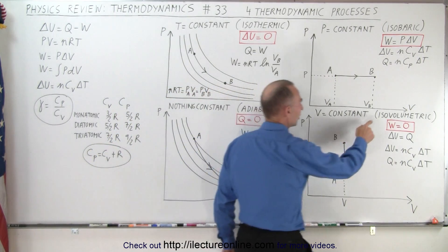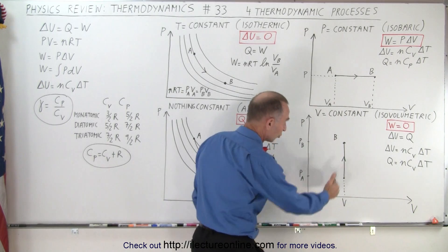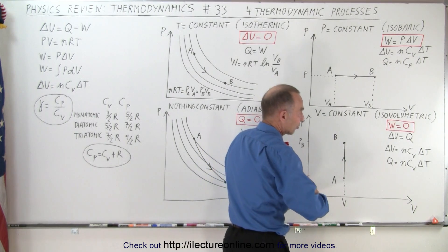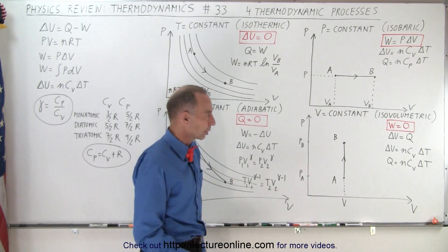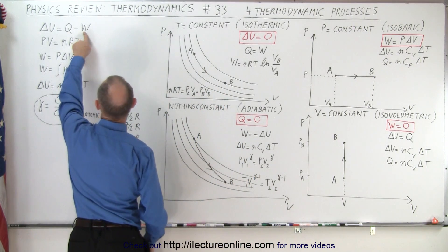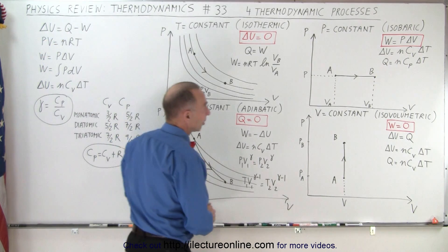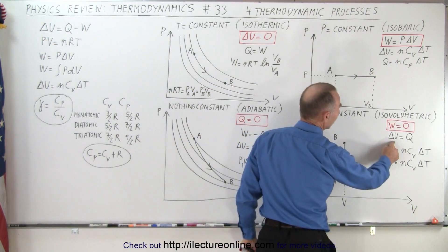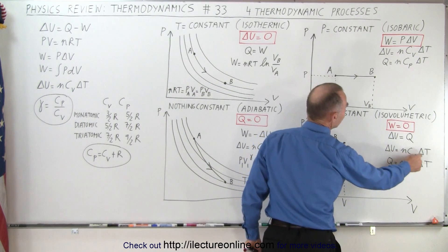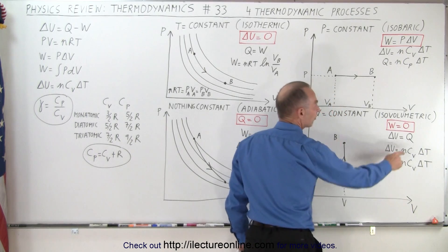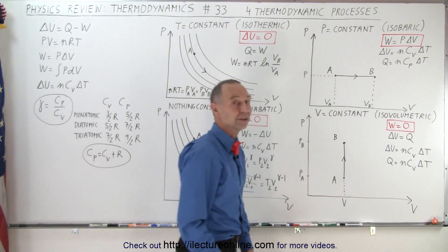In the isovolumetric process, work is zero because there's no area under the curve — the gas does not change volume, so it cannot do work. Setting work equal to zero means the change in internal energy equals the heat added to the gas. So delta U equals n C sub V delta T, and therefore Q must also equal n C sub V delta T because they are equal to each other.